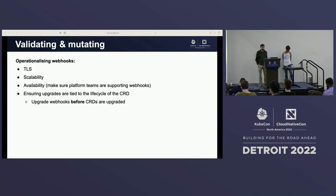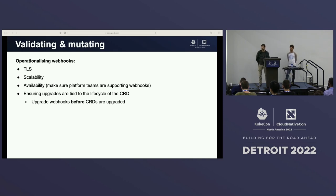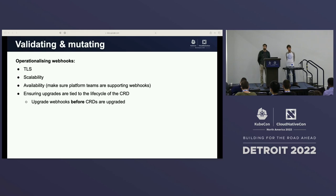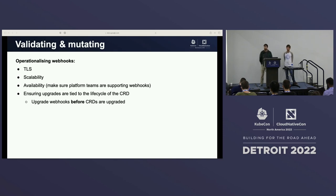Depending on which objects we define webhooks for, they might come with operational burden, especially regarding scalability. Think about a webhook for pod objects — it would be consulted every time a pod gets mutated. The challenge with webhooks is essentially that they sit on the back of your API server, and depending on the configuration, the API server might be forwarding a lot of requests there, so they affect the end-to-end experience of users with your API. There are also challenges especially with CRDs that aren't that mature, when we're still building the schema — things related to the lifecycle management of the webhooks themselves. It's really important to upgrade the webhooks before the CRD gets upgraded.